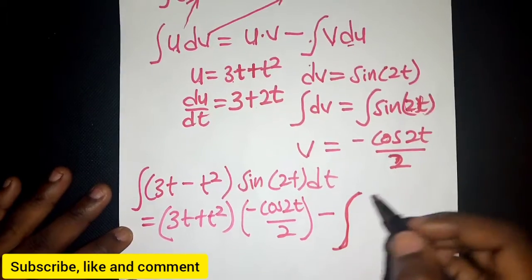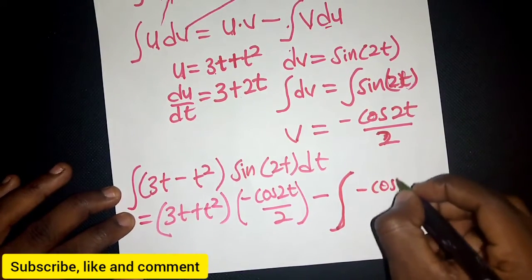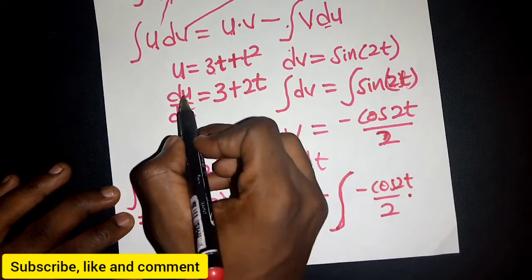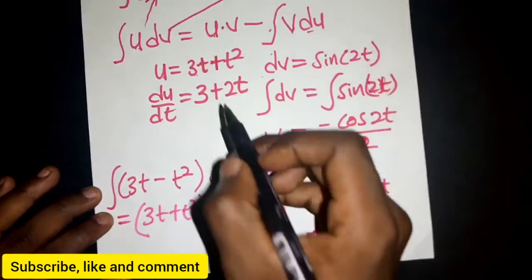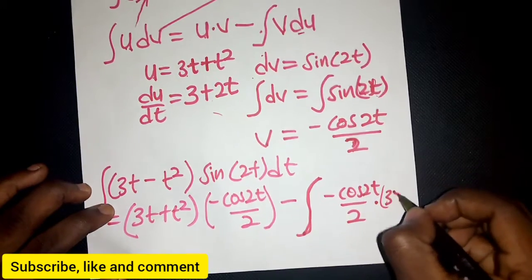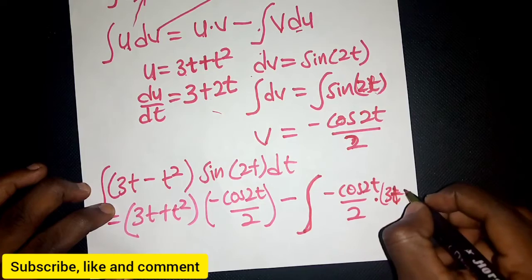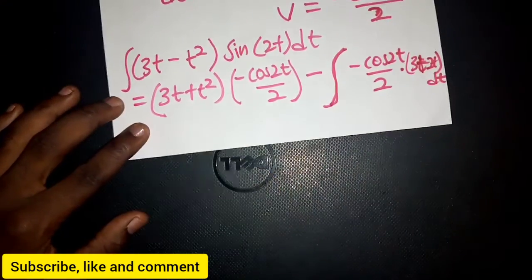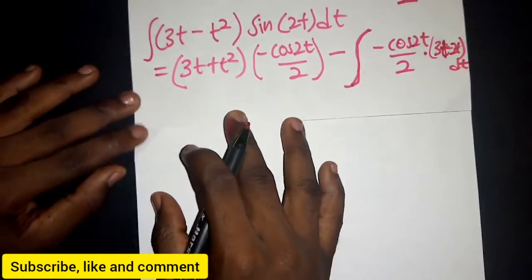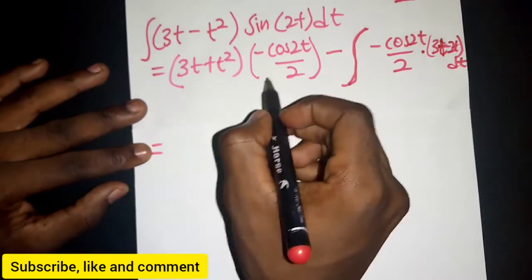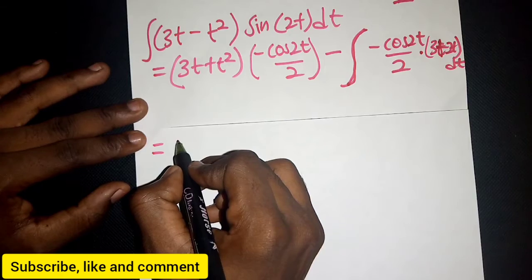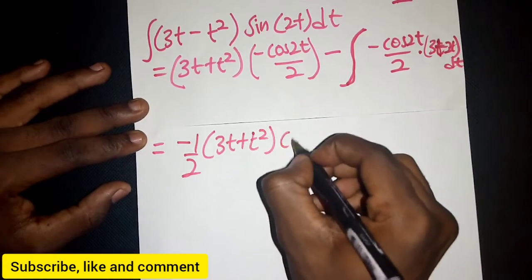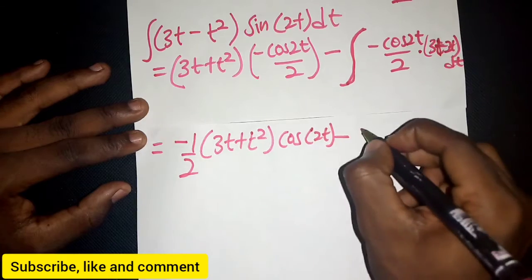The integral of v·du: v is cos(2t)/2 and du is (3 + 2t) dt. Writing this out fully, we have -½·(3t + t²)·cos(2t) minus the integral of [cos(2t)/2]·(3 + 2t) dt.